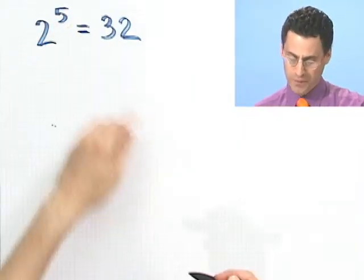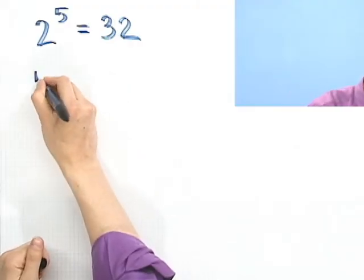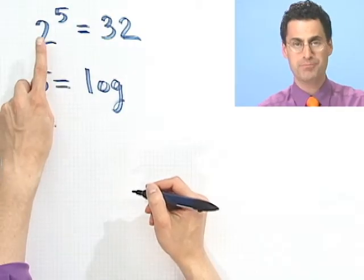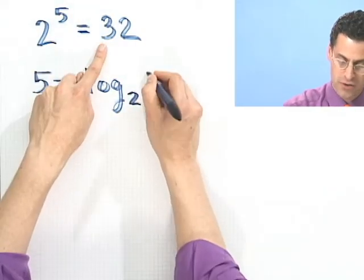A log is an exponent, so that exponent must equal the log. So I must have that 5 is the exponent. So 5 is log, right? Log is the exponent that I have to raise the base 2 to, so this must be a base 2 in order to get 32.